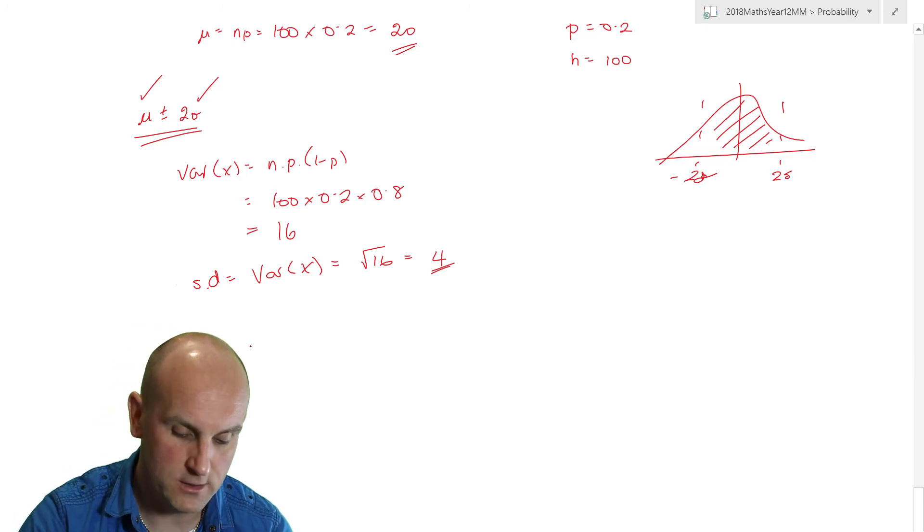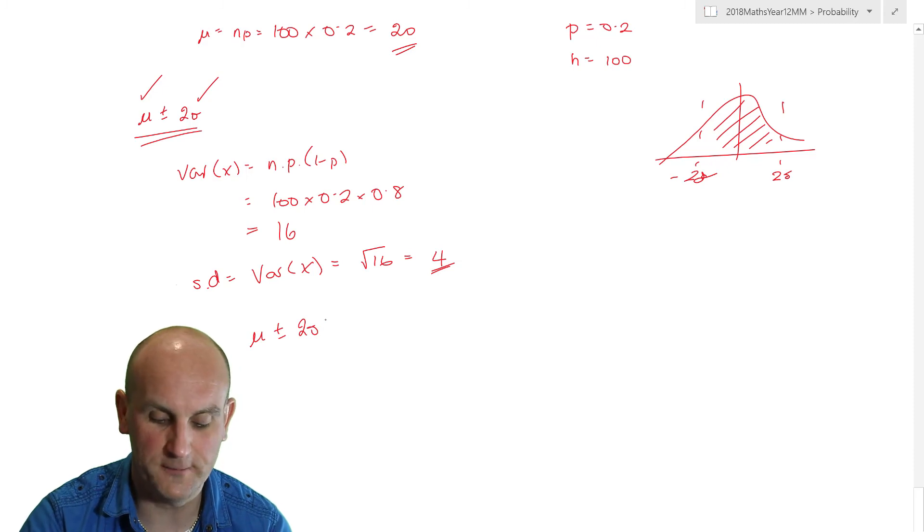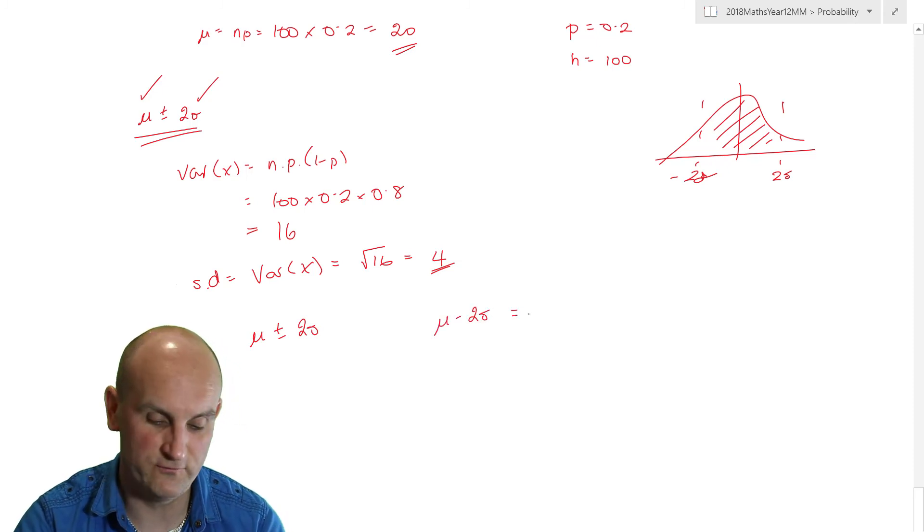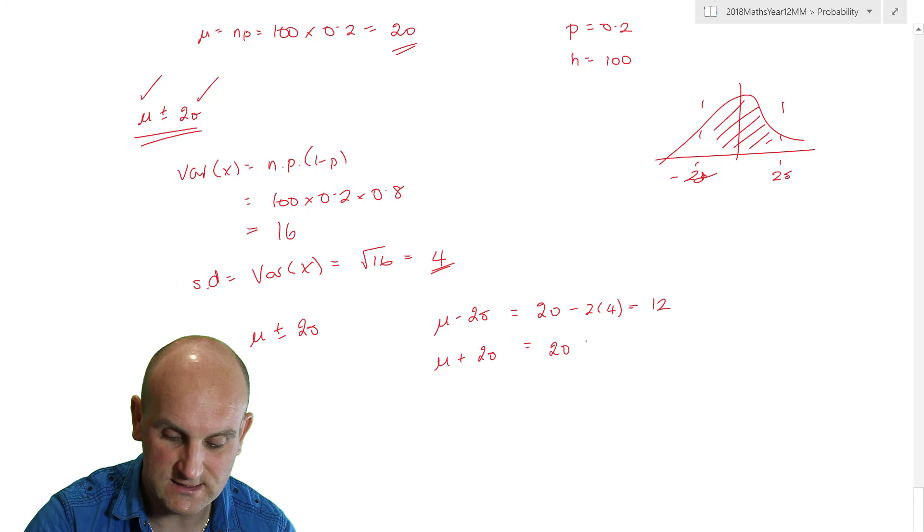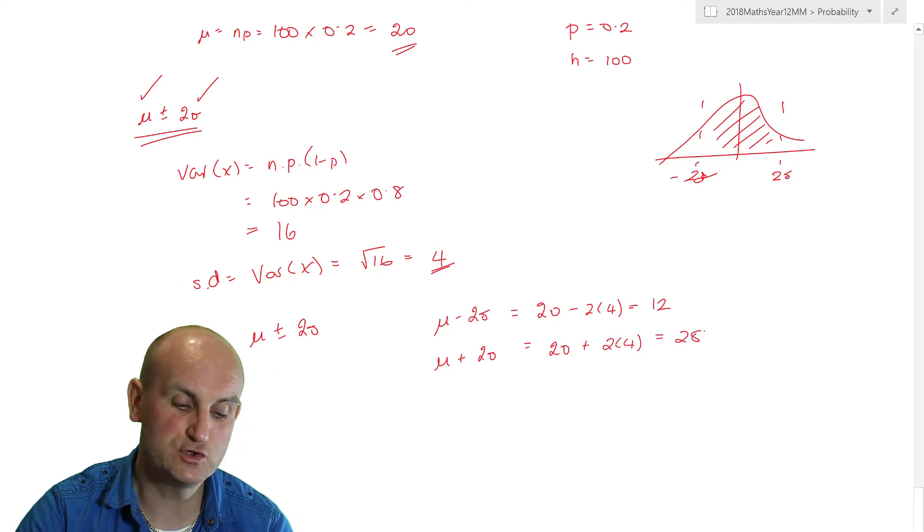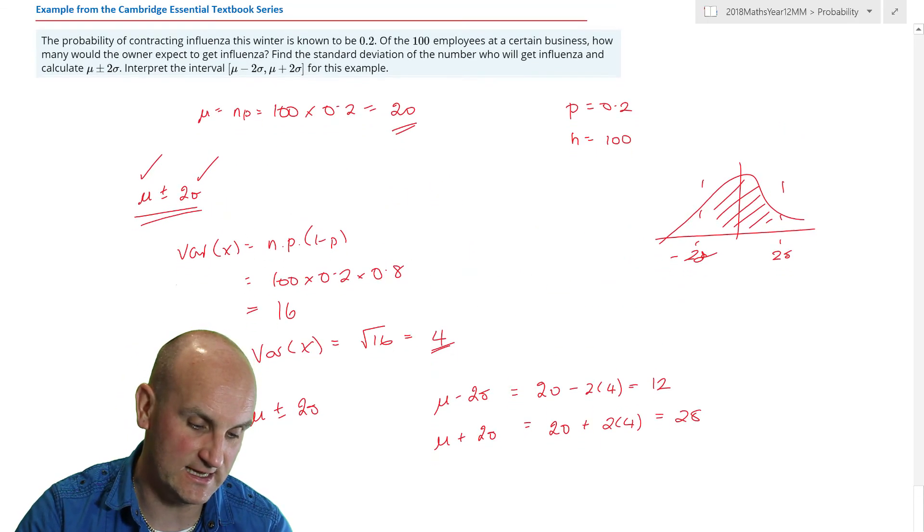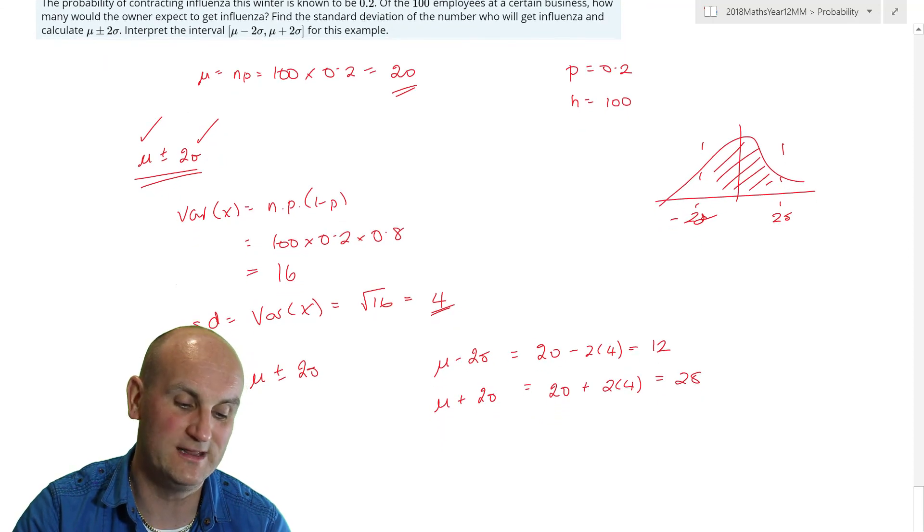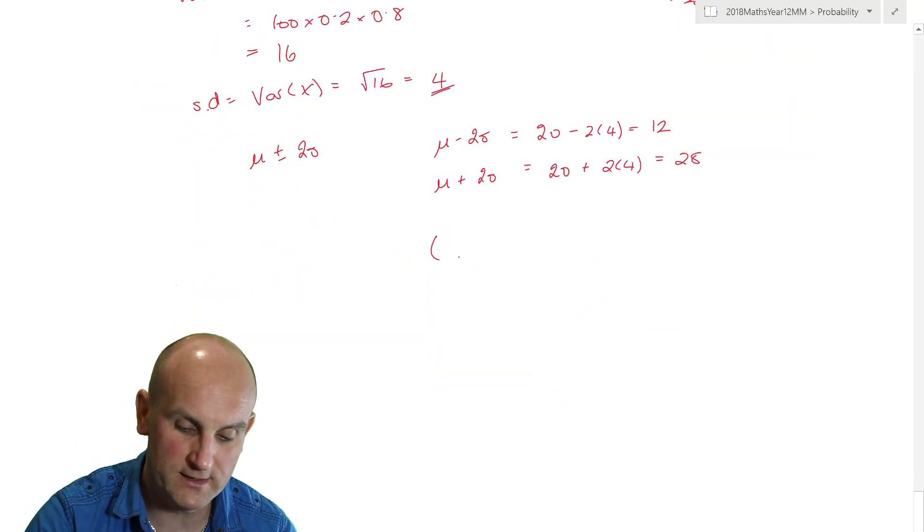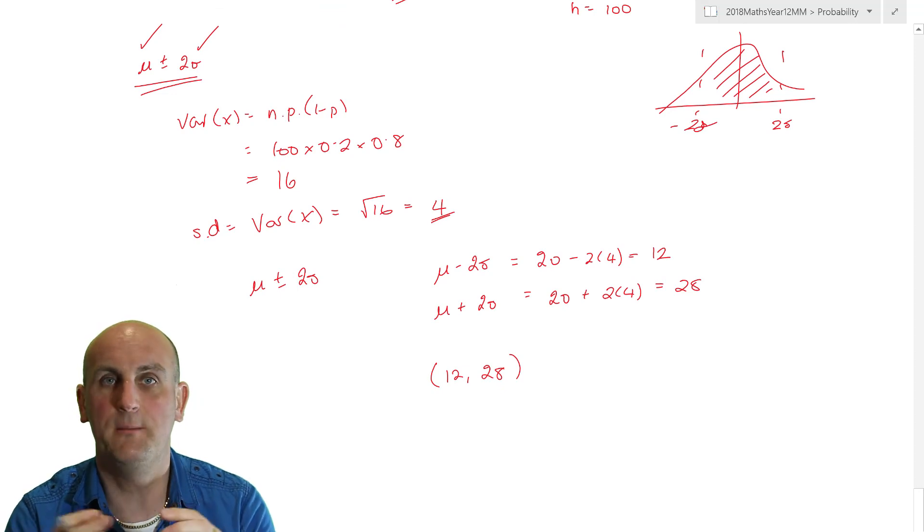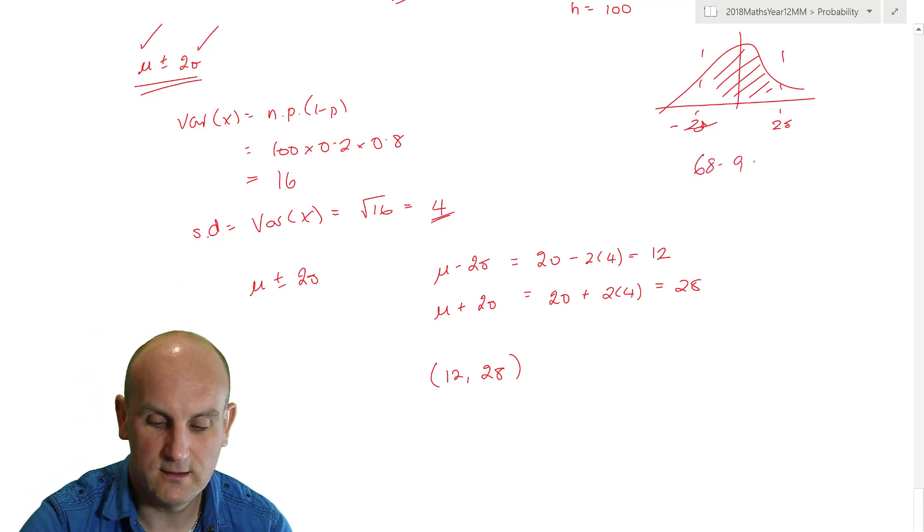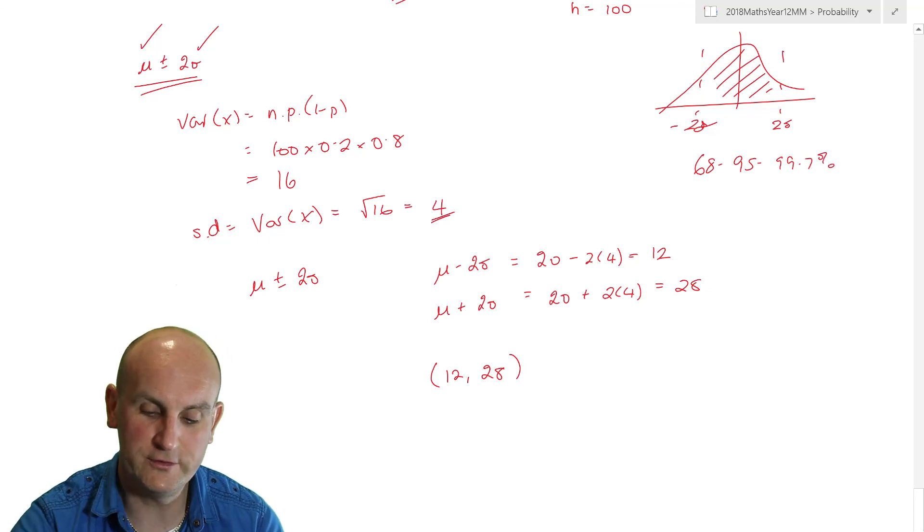We now want to work out mu plus or minus 2 sigma. Mu minus 2 sigma is 20 minus 2 lots of 4 which is 8, which gives me 12. And mu plus 2 sigma would be 20 plus 2 lots of 4 which is 28. So the interval would be from 12 to 28. Going back to how much data falls between two standard deviations of the mean, it's 68, 95, 99.7 percent. So two standard deviations is 95 percent. We are 95 percent sure that between 12 and 28 people will contract influenza this flu season.